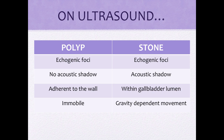On ultrasound, polyps are usually less than 10 millimeters. They're single or multiple echogenic foci which do not cast a shadow. They're adherent to the wall and are immobile or fixed, so they won't move when you turn a patient to their left side. Gallstones, on the other hand, are single or multiple echogenic foci found within the gallbladder lumen that cast an acoustic shadow, and they have gravity-dependent movement so they roll with the change of patient positioning. This is sometimes called the rolling stone sign.